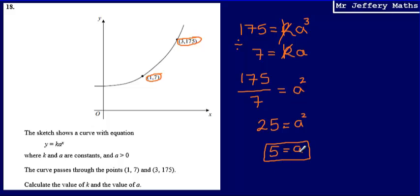So I now know that a is equal to 5, and what I should know is that with any simultaneous equation, as soon as I've got one of the values, I can just substitute that into one of my equations and then solve to find the other unknown.